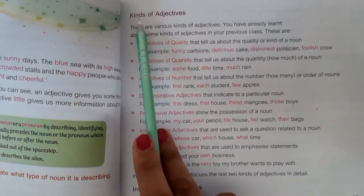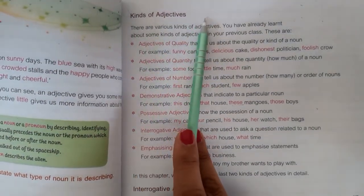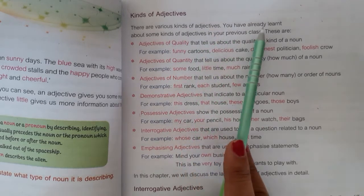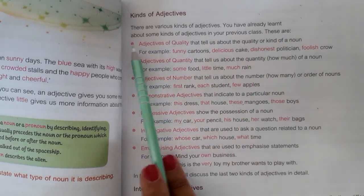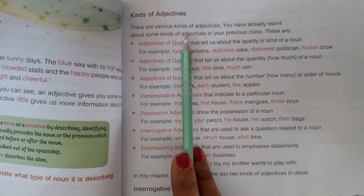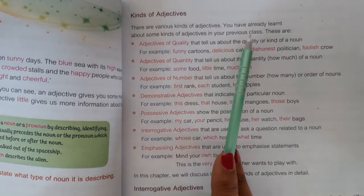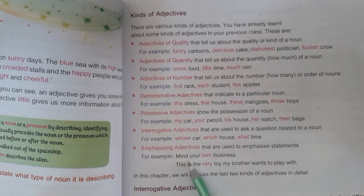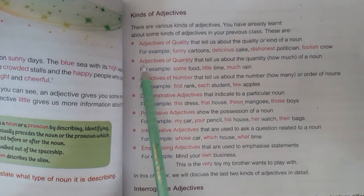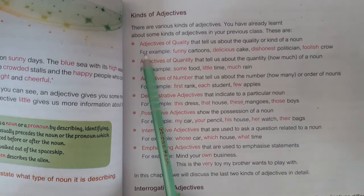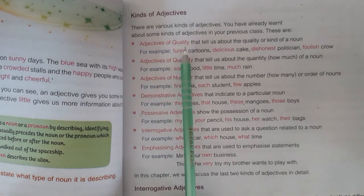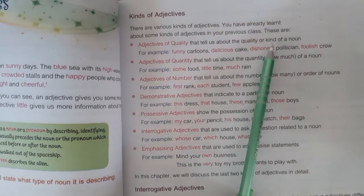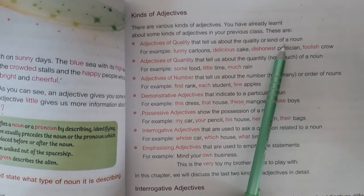The next topic is kinds of adjectives. There are various kinds of adjectives — you may have already learned some in your previous class. The first kind is adjective of quality, which shows us the quality of the noun.